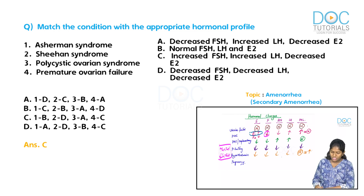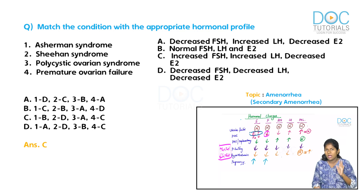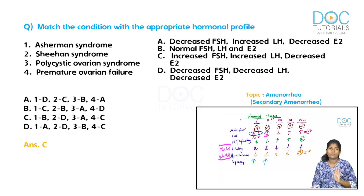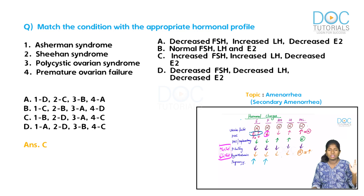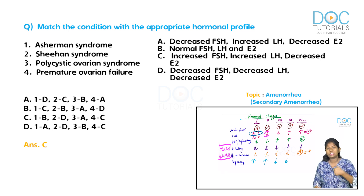In pregnancy, both estrogen and progesterone are high, and they come not from the ovaries but from the placenta. The placenta is the main source of estrogen and progesterone during pregnancy, independent of the pituitary. This estrogen and progesterone inhibit the pituitary, decreasing FSH and LH levels. Prolactin also increases in pregnancy. So pregnancy is an important condition where estrogen and progesterone increase while FSH and LH decrease.